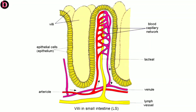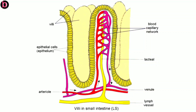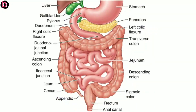Inside each individual villus there are numerous blood capillaries surrounding a lymph vessel called a lacteal. The lacteal is for absorption of lipid substances from the digestive tract, while other substances like proteins and carbohydrates are directly absorbed into the blood capillaries of the villi. The last part of the small intestine, the ileum, connects with the first part of the large intestine, the cecum, and this connection is guarded by a valve known as the ileocecal valve or ileocecal junction.